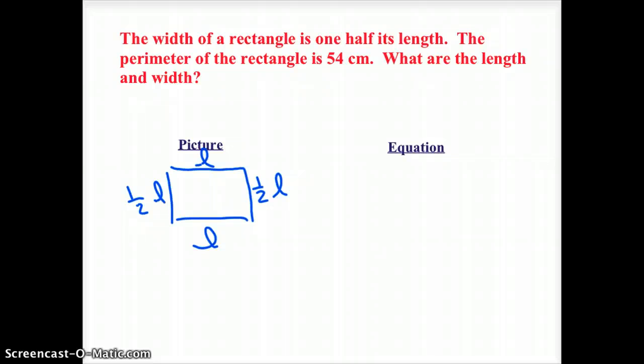So again, I'm going to add L, L, and half L, and a half L, which is 3L, the perimeter, should equal 54. If I do 54 divided by 3, I get that L equals 18.